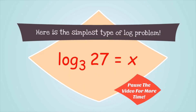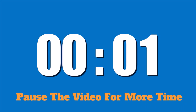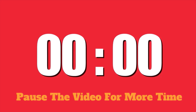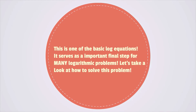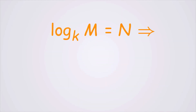Here is the simplest type of log problem. Can you find the value of x in the following equation? Log base 3 of 27 is equal to x. This is one of the basic logarithmic equation forms. It serves as an important final step for many logarithm problems. Let's take a look at how to solve this type of log equation.